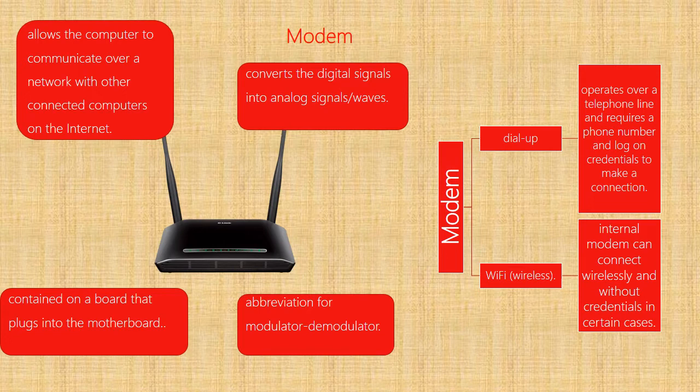The modem contains a board that is plugged into the motherboard. The abbreviation modem stands for modulator-demodulator — it converts digital signals into analog or wave signals. The modem is of two types: dial-up and Wi-Fi (wireless). The dial-up system operates over the telephone line and requires a phone number and log-on credentials. With Wi-Fi, the internal modem can connect wirelessly and without credentials in certain cases.